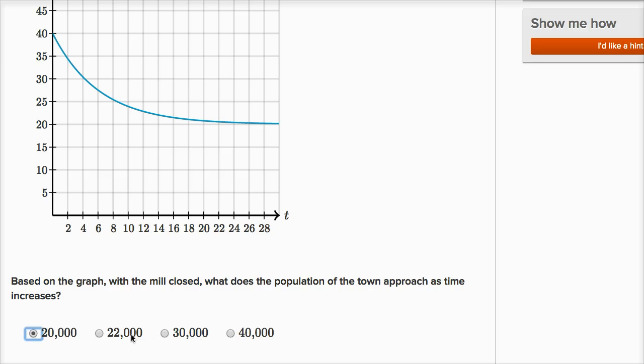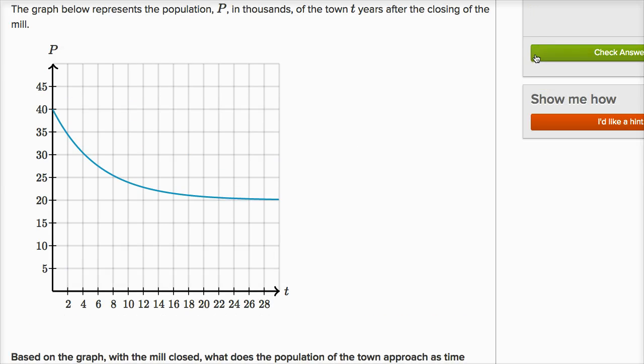It's already gotten below 22,000 as far as, it looks like after 20 or 22 years, we've already gotten below 22,000. So we're definitely below 30 or 40,000. But we haven't gotten below 20,000, but we are approaching it. We can even check our answer if we like.